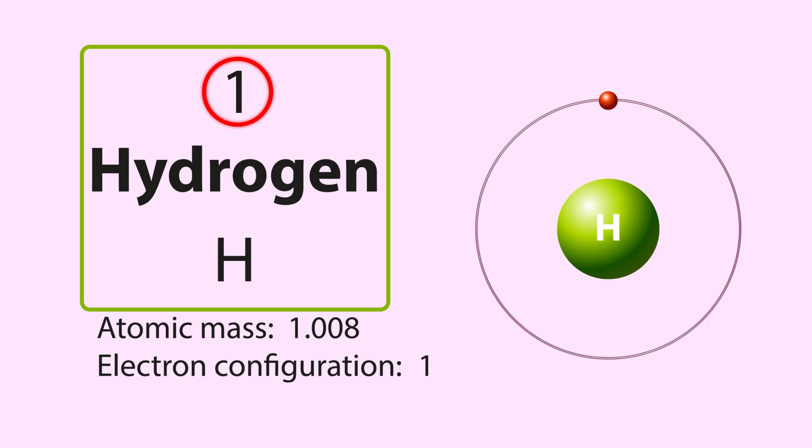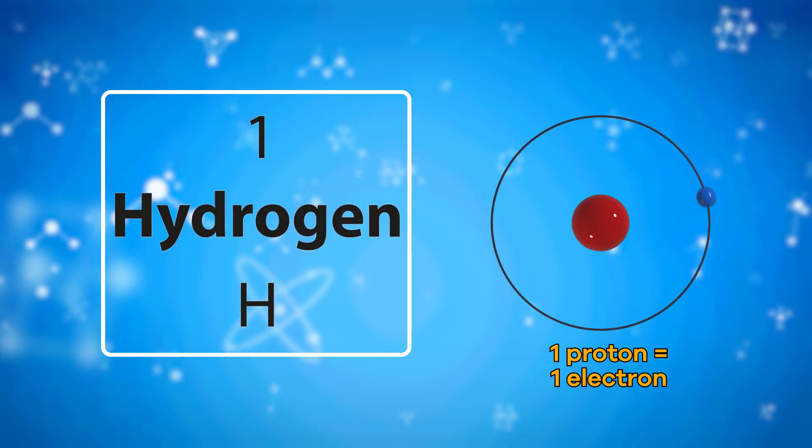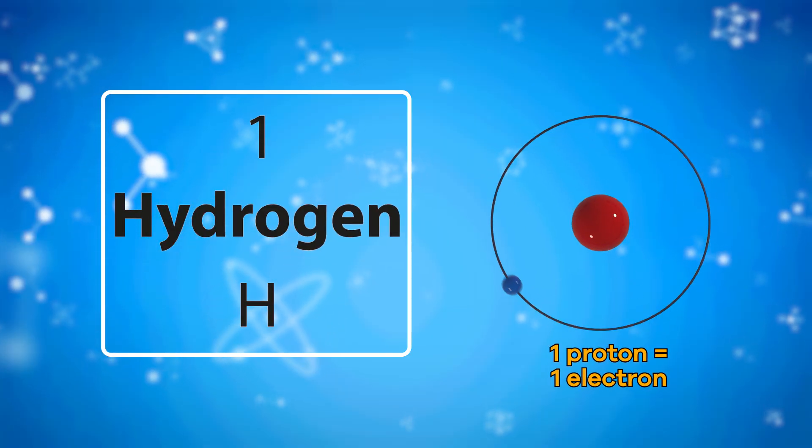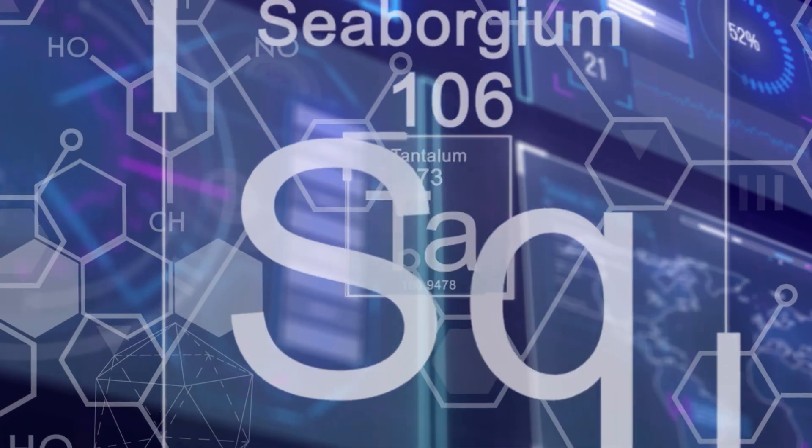For example, hydrogen has an atomic number of one because every hydrogen atom has one proton in its nucleus. No other elements have only one proton.